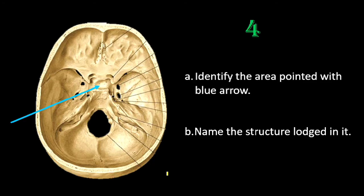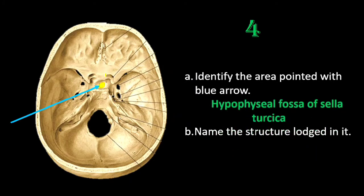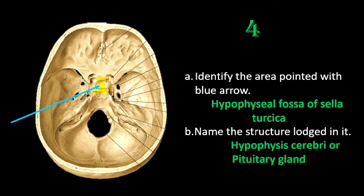The next question is: identify the area pointed with the blue arrow and name any structure lodged in it. The area pointed is the hypophysial fossa, which belongs to the sella turcica. The name sella turcica refers to a Turkish saddle. It is present over the central area of the middle cranial fossa and has three parts: an elevation called the tuberculum sellae, a depression called the hypophysial fossa, and another elevation called the dorsum sellae. As the name suggests, the hypophysial fossa lodges the hypophysis cerebri, or pituitary gland.